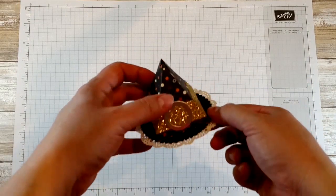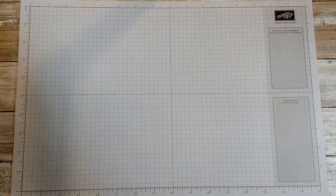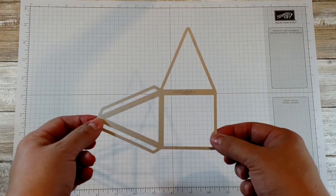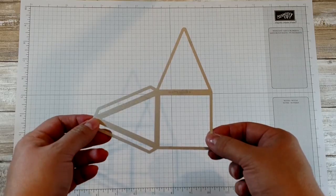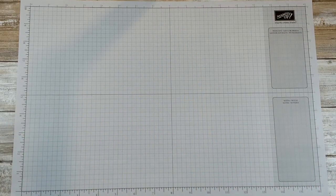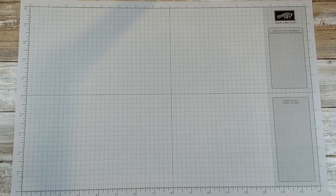Now I made this last year with a die that's no longer available. It was called Pyramid Pals and this is what the box looks like. If you don't own this die set already, you can still make this box by using the template that is located in my tutorial on the Splitco Stamper site.